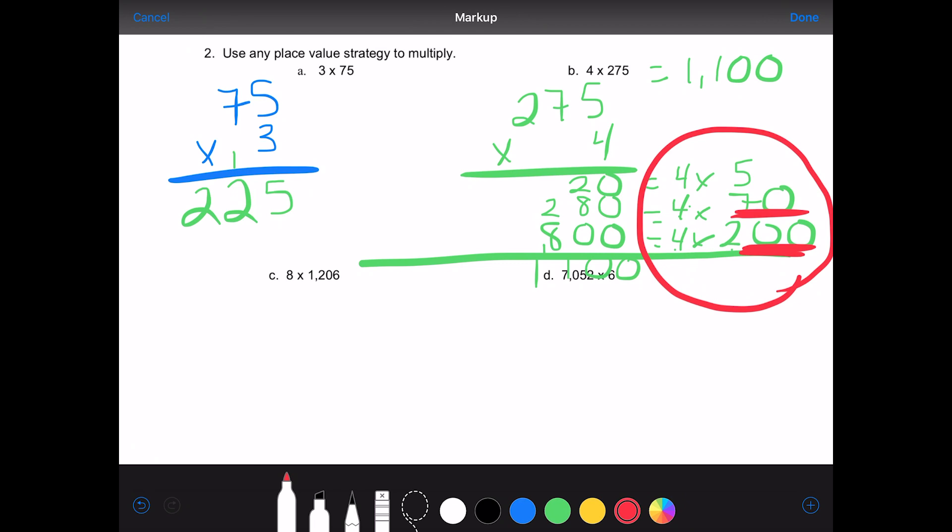Let's do C using the area model. Again, you can do any place value strategy that you like, so I'm just trying to give you a variety. So I'm going to put an 8 on the side and draw a long area model. For 1, I'm going to have 1,000. For the next box, I'm going to have 200. I don't need a 0 box because it would be tiny, there would be nothing there. And then I have a 6 for the last box.